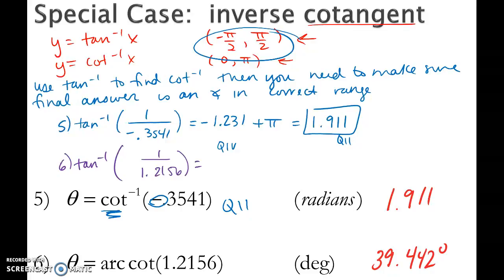So here, when I get the answer from the calculator, and again, we want this one to be in degrees, I'm going to get 39.442. And that is my answer. I leave it be. In this case, I don't add 180.